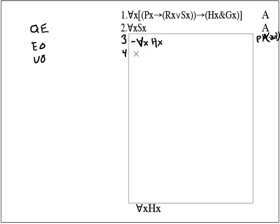We have a single dash in front of a quantifier on line 3. We should change it into, there is an X dash HX. Move the dash to the inside, change the quantifier. That's 3QE. All right, and let's check off line 3.